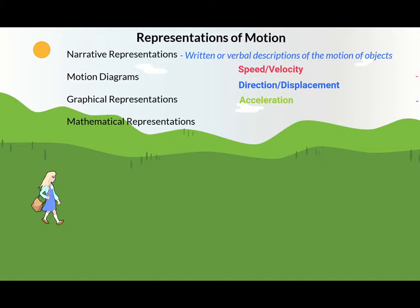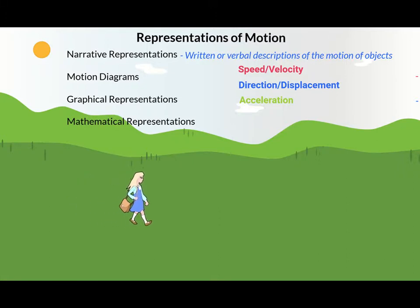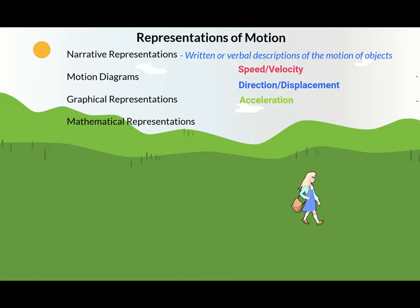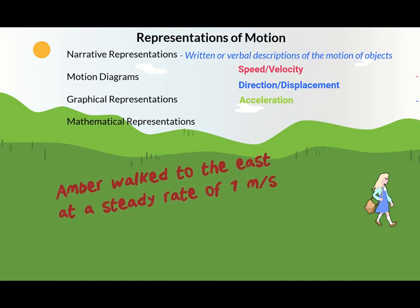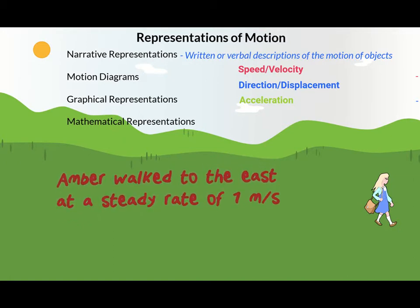Let's take a look at an example. Suppose this girl here is walking through the park. A complete narrative representation of her motion would be something like: 'Amber walked to the east at a steady rate of one meter per second.' This tells us what direction Amber is walking, that she has no acceleration, and that her velocity has a value of one meter per second.